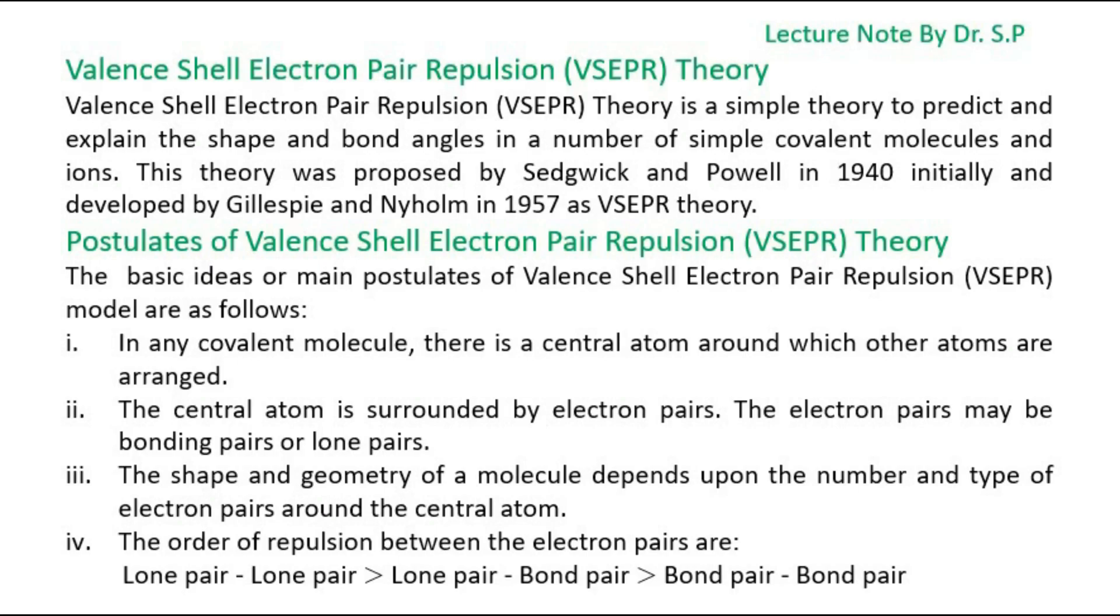Valence Shell Electron Pair Repulsion VSEPR Theory. Valence Shell Electron Pair Repulsion VSEPR Theory is a simple theory to predict and explain the shape and bond angles in a number of simple covalent molecules and ions.